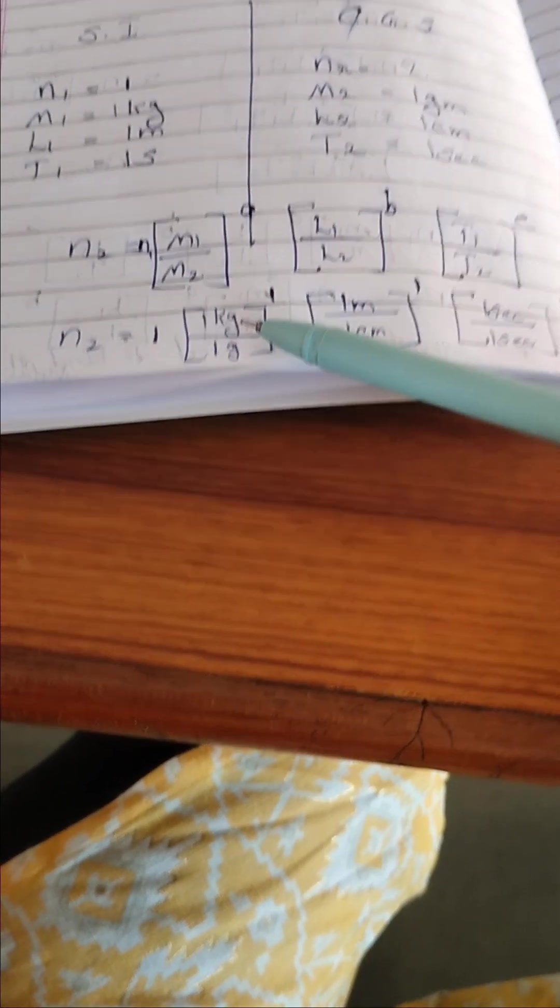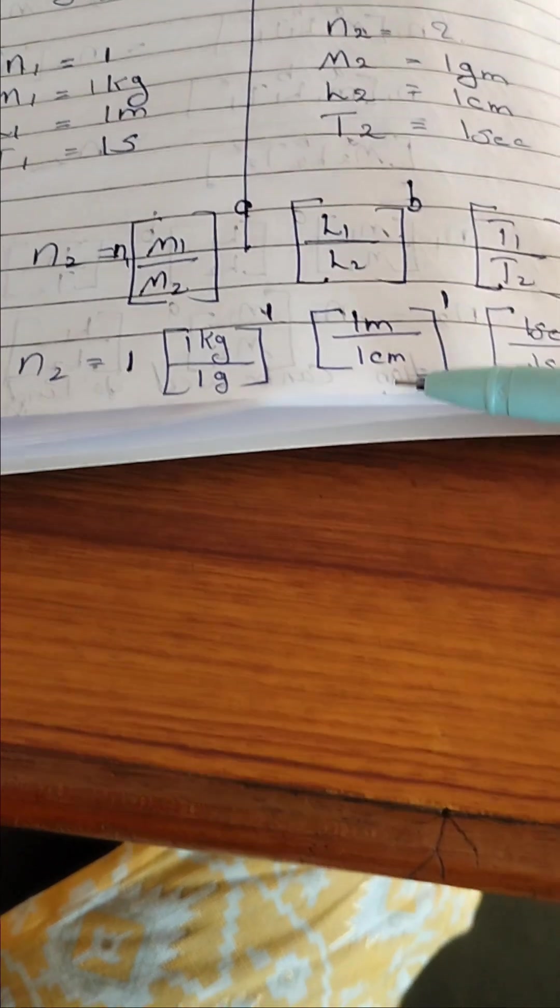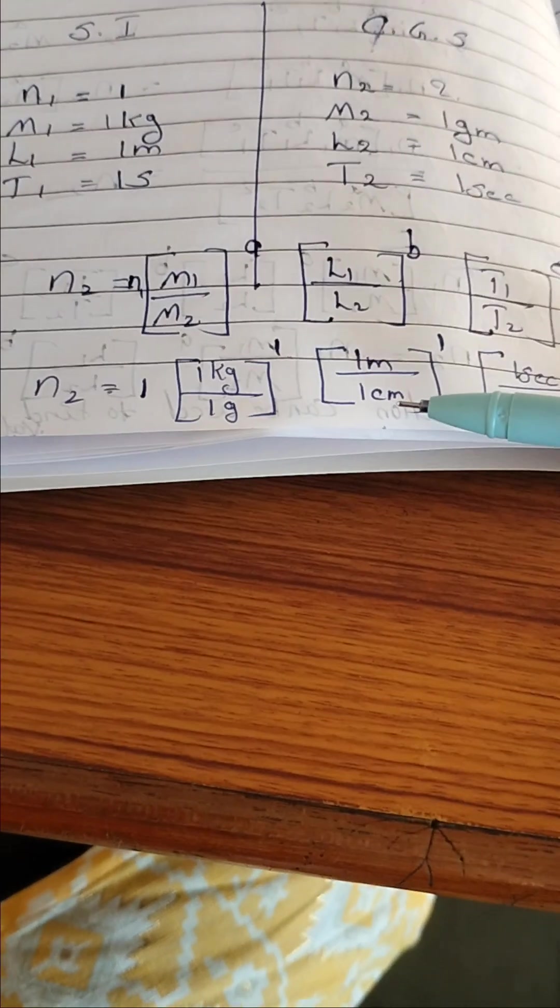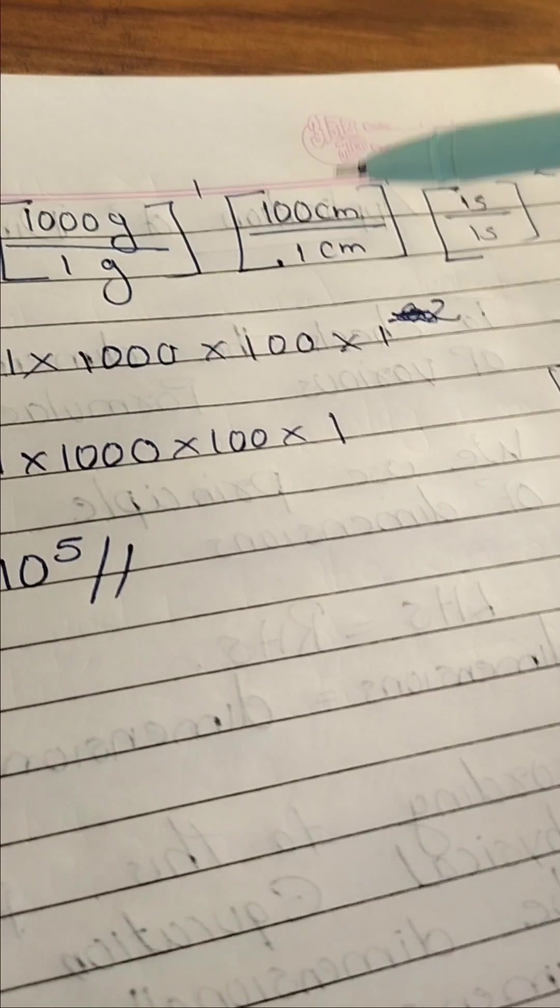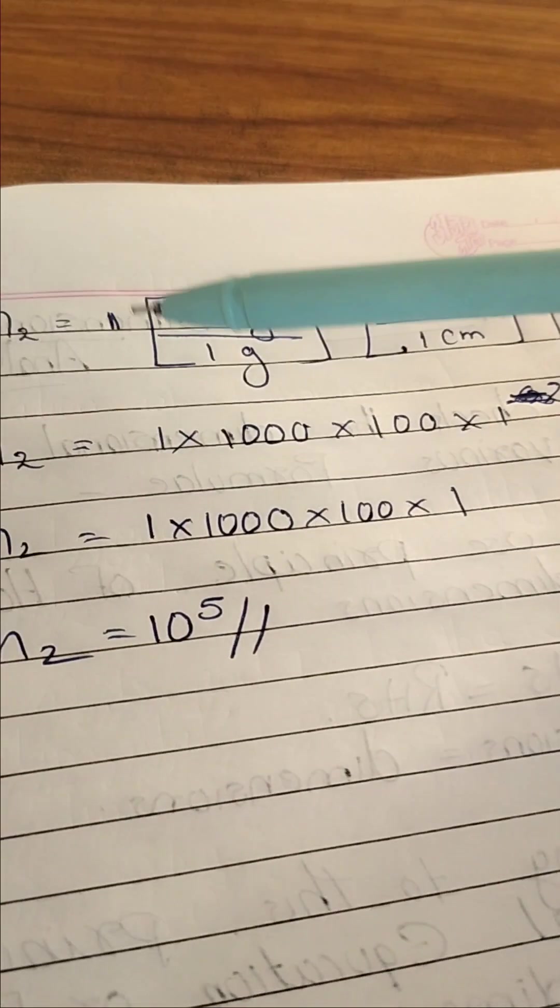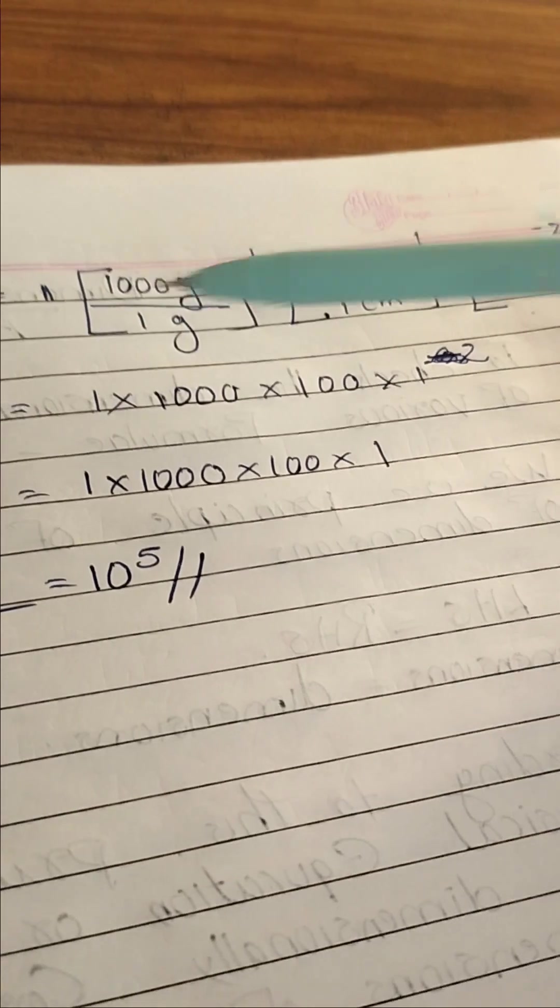Listen here. Kilogram gram, meter centimeter, second second. So I just try to convert kilogram into gram. How many gram in 1 kilogram? Yes. Thousand gram equal to 1 kilogram. So in the place of kilogram I write thousand gram. Next one is centimeter. Please tell me how many centimeters in 1 meter. Correct. Hundred centimeter equal to 1 meter. So convert the meter into centimeter. Hundred centimeter divided by 1 meter. And second and second. Then thousand gram, 1 gram. Hundred centimeter, 1 centimeter. 1 second, 1 second.